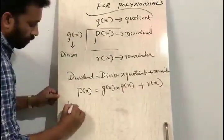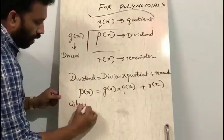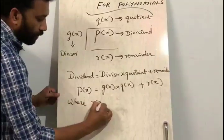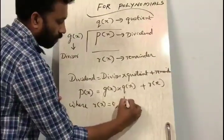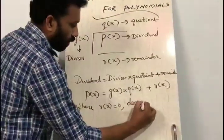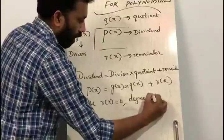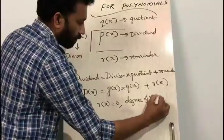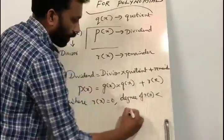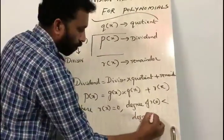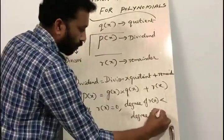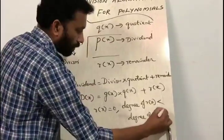Where r of x is equal to 0, or the degree of r of x is less than the degree of g of x.